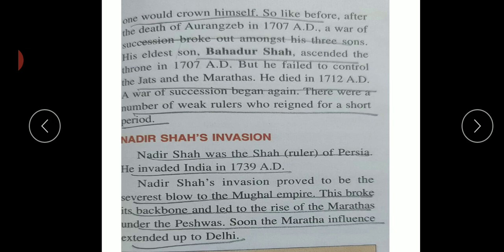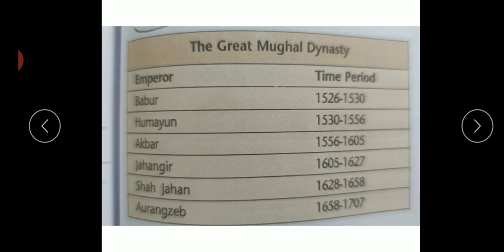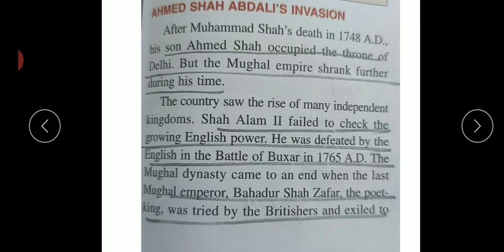Nadir Shah was the person who invaded India in 1739. He proved the Mughal Empire was weak. The Mughal dynasty timeline: Babur 1526-1530, Humayun 1536, Akbar 1556-1605, Jahangir 1605-1627, Shah Jahan 1628-1658, Aurangzeb 1658-1707, and the last ruler Bahadur Shah Zafar.